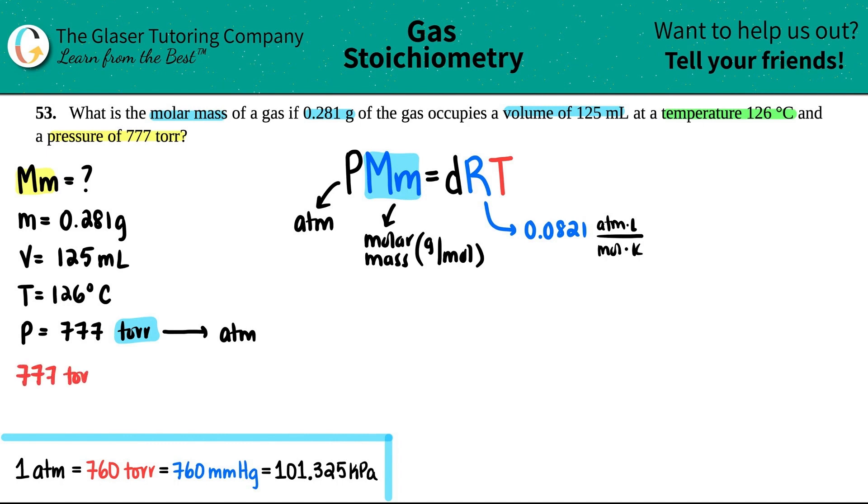So let's go for it. 777 torr. We don't want that. Remember, when we're converting, we just times by a ratio. We throw the unit down at the bottom, and then ATM goes up on the top. Now here is the big four list of pressure units, and they're all equal to each other. So you just have to memorize these. But just for this one, pick the two. 1 ATM equals 760 torr. So 1 ATM equals 760.